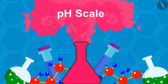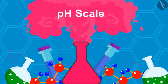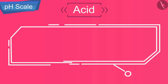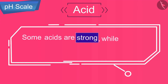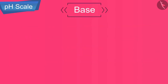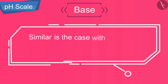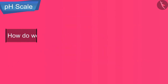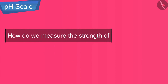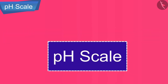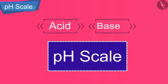Hello friends, welcome to this video session. The topic that we are going to cover in this session is the pH scale. You already know that some acids are strong while some acids are weak in strength. Similar is the case with bases — we have strong and weak bases. We use the pH scale to determine the strength of acids and bases.